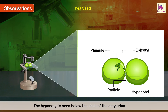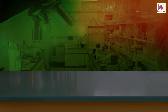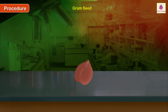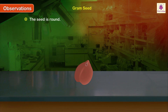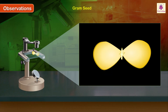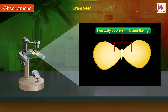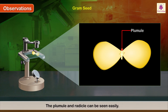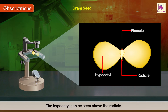Procedure: Repeat the same steps with the gram seed. Observations: the seed is round; the hilum and micropyle can be seen easily. It has two cotyledons; the cotyledons are thick and fleshy. The plumule and radicle can be seen easily. The hypocotyl can be seen above the radicle.